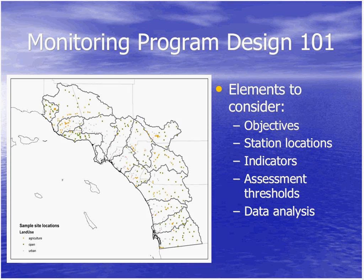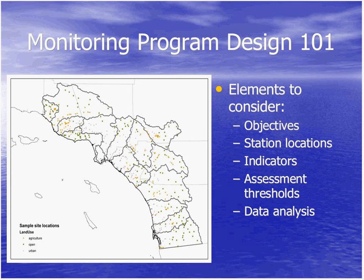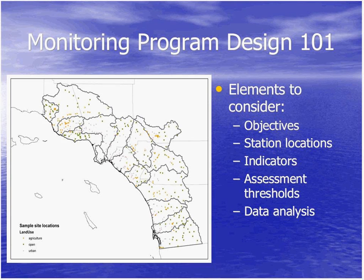When you try to pick points on a map to decide how to monitor something, there are certain basic elements you should consider. First, you want to define your objectives, decide how to pick your station locations, decide what type of indicators you're going to use, figure out what your assessment thresholds are, and determine how you're going to evaluate the data you get.